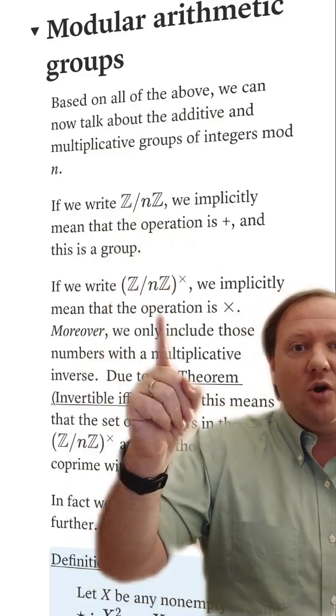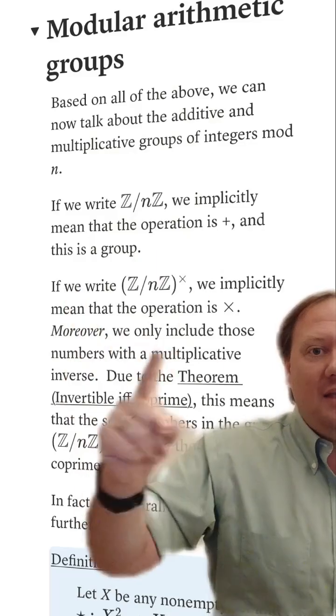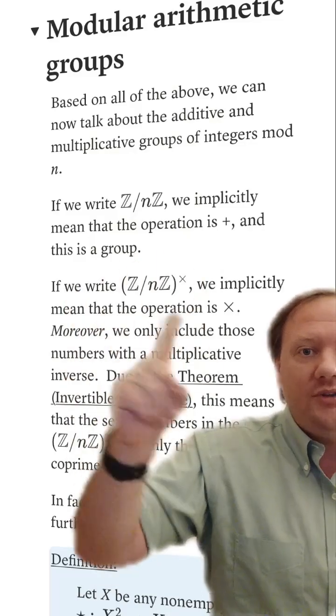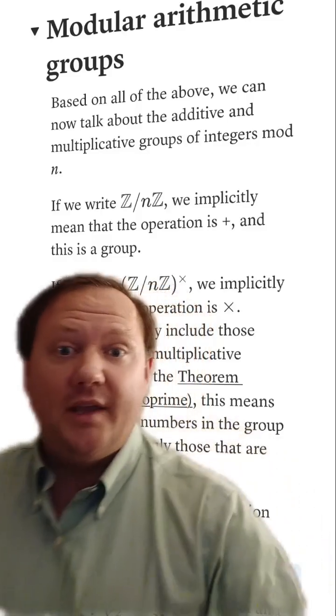So if anything is coprime with n, it has an inverse, and then we form the group of all such elements, of course with the operation of multiplication.